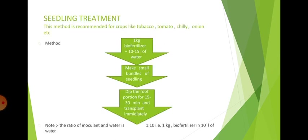Seedling treatment is recommended for crops like tobacco, tomato, chili, and onion. The method is: 1 kg biofertilizer plus 10 to 15 liters of water. Make a small bundle of seedlings and dip the root portion for 15 to 30 minutes, then transplant immediately. Note that the ratio of inoculant to water is 1:10, that is 1 kg biofertilizer in 10 liters of water.